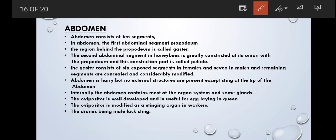The third region of honeybee is abdomen. Abdomen consists of 10 segments. The first abdomen segment is called propodeum. The region behind the propodeum is called gaster. The second abdomen segment is fully constricted. It is called petiole. The gaster consists of 6 exposed segments in females but in males there are 7 exposed segments. Abdomen is fully hairy. No external structures are present except sting is present at the tip of the abdomen.